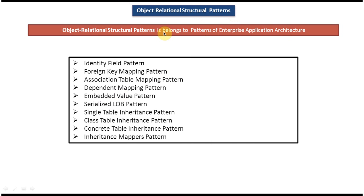These are the many patterns which come under the relational structural patterns. I will read out one by one. The first one is identity field pattern. Next one is foreign key mapping pattern. And next one is association table mapping pattern. Dependent mapping pattern. Embedded value pattern. Serialized LOP pattern. Single table inheritance pattern. Class table inheritance pattern. Concrete table inheritance pattern. And the final one is inheritance mappers pattern.